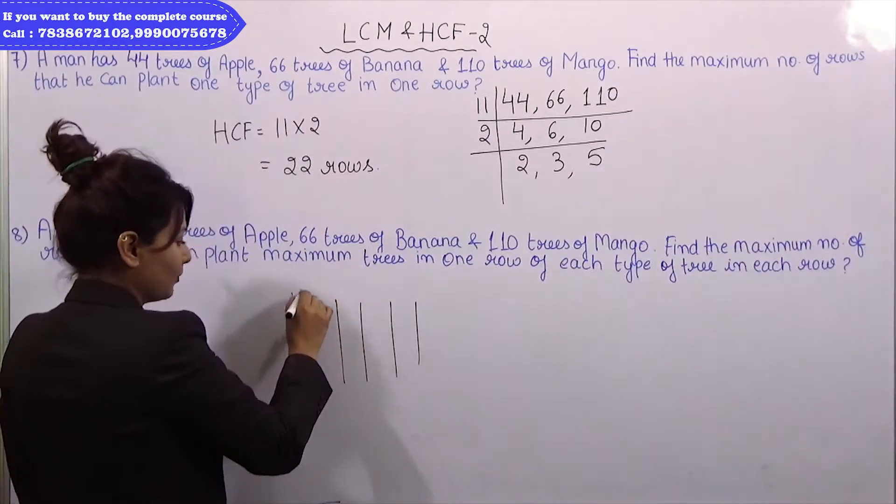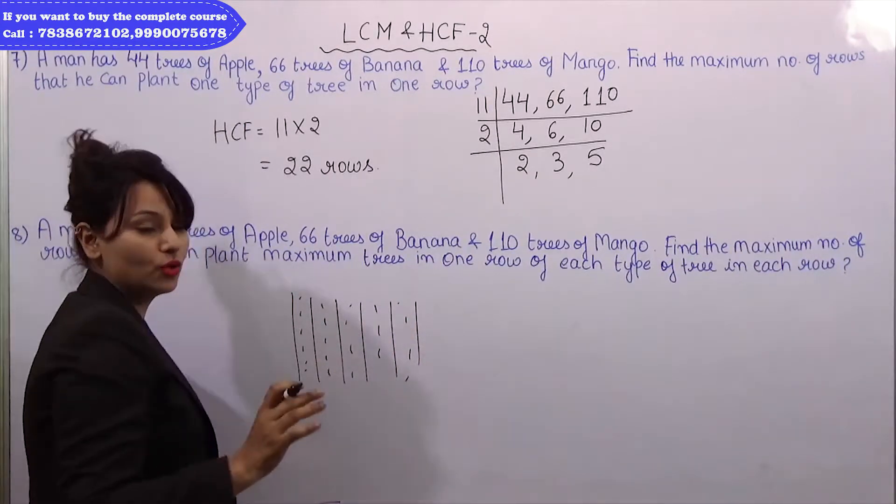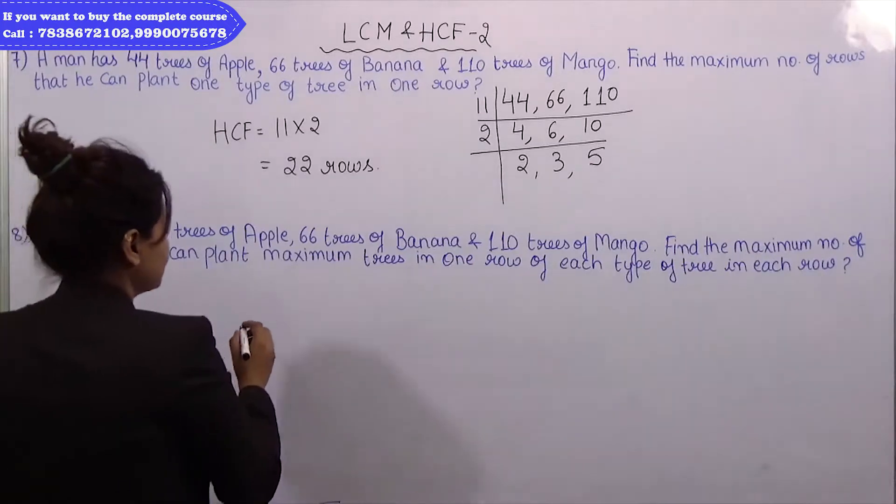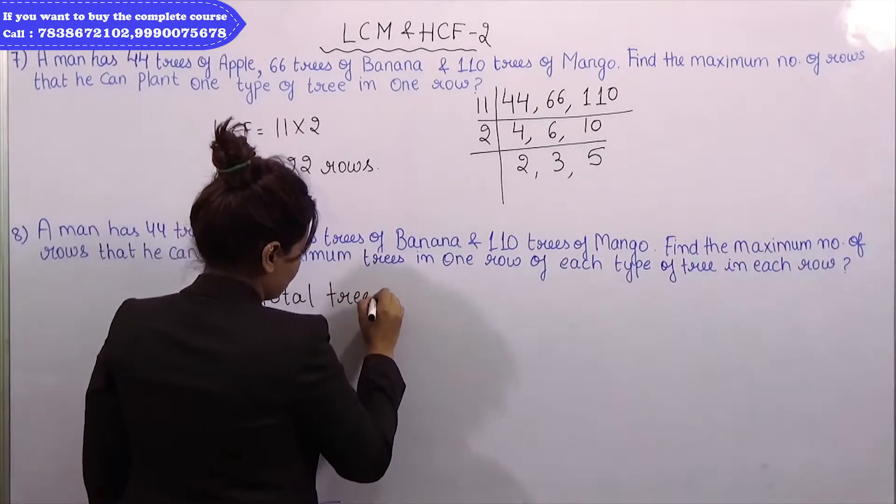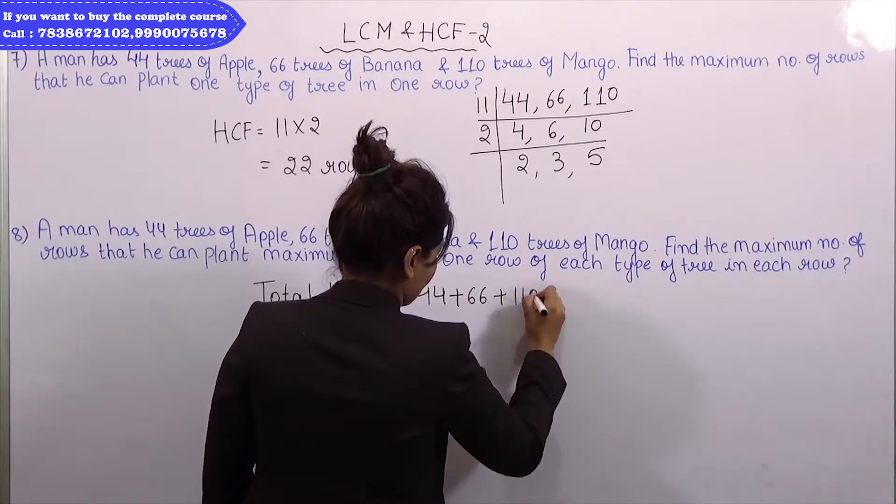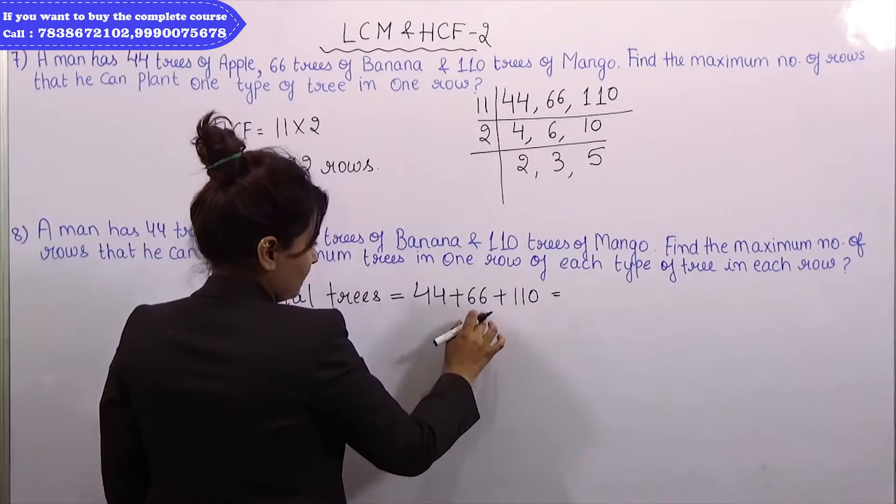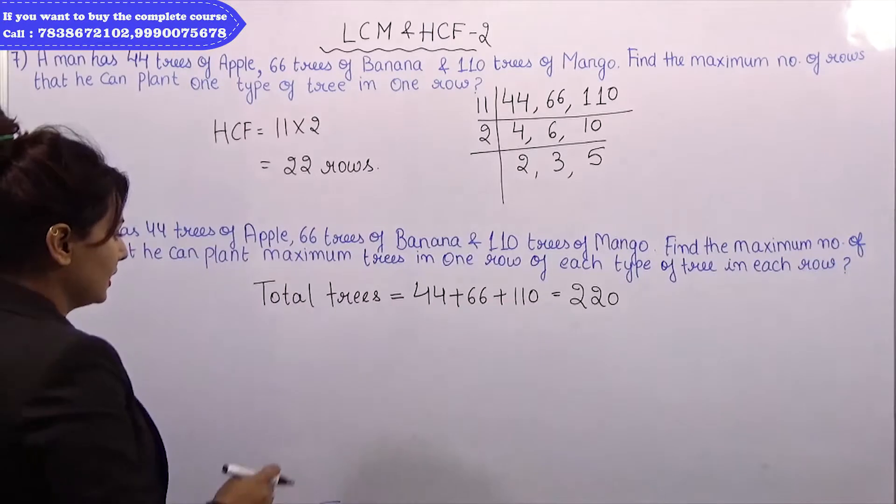Which means how many rows? We have total trees. How many trees? 44 plus 66 plus 110. How many trees are there? 220 trees.